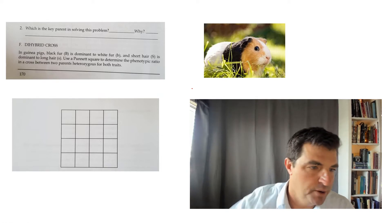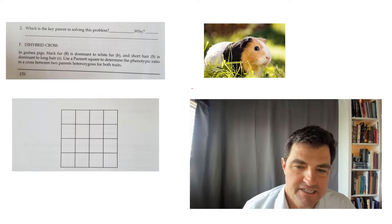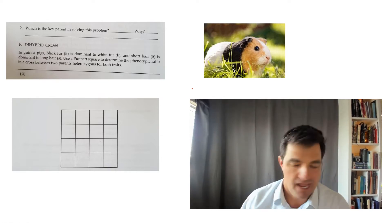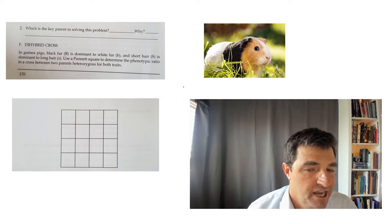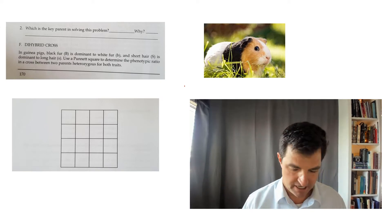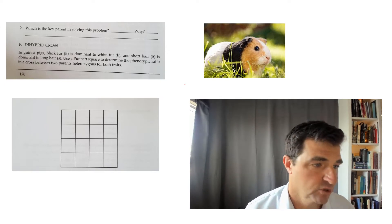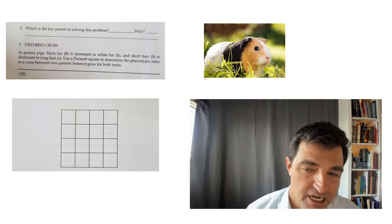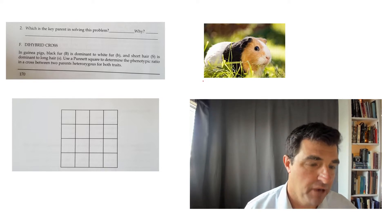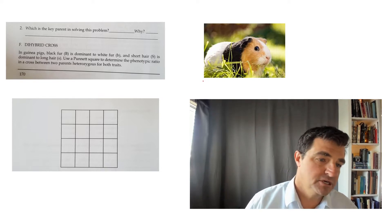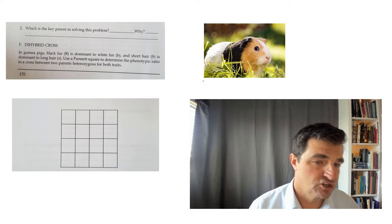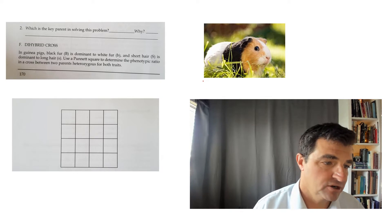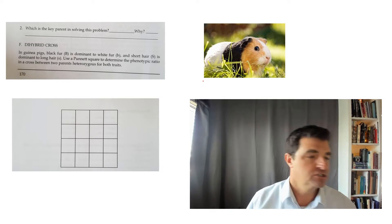What we have in this case is this cute little guinea pig, and this is a little more challenging than our simple Punnett square we've done before, because now we're looking at two different genes at the same time. We're looking at this guinea pig having black fur, which is dominant over white fur, and also a separate gene — short hair being dominant over long hair.